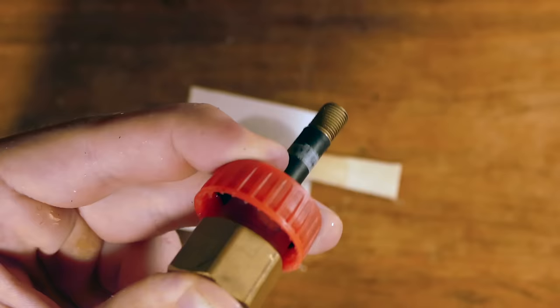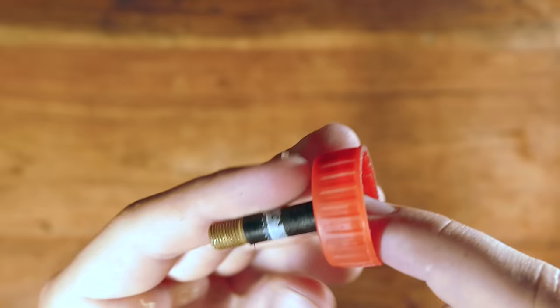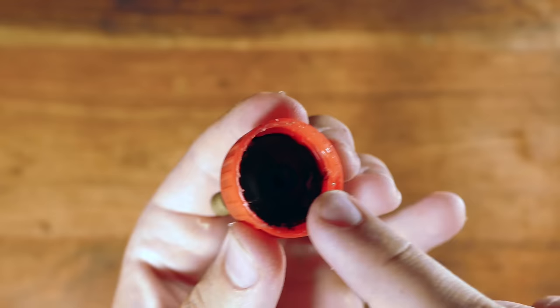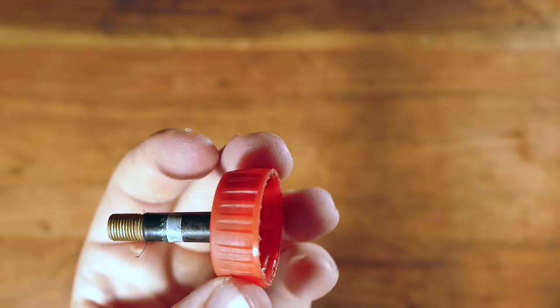And once the glue is dry, you should have something that looks like this. It doesn't even matter too much about how secure this glue bond is, because when you screw in the cap, the actual lid will push up on this, creating a seal of its own. So, it's alright if the bond's not perfect.